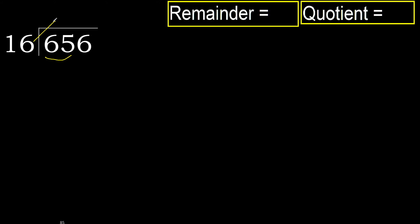16 multiplied by which number is nearest to 65 but not greater? 16 multiplied by 5 is greater. Multiplied by 4 — 64 is not greater, ok.